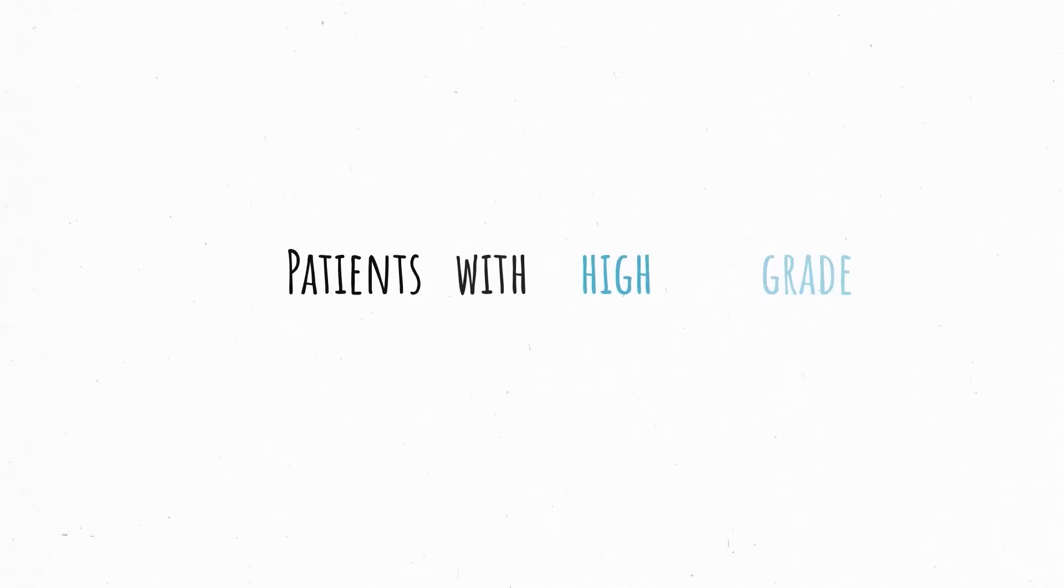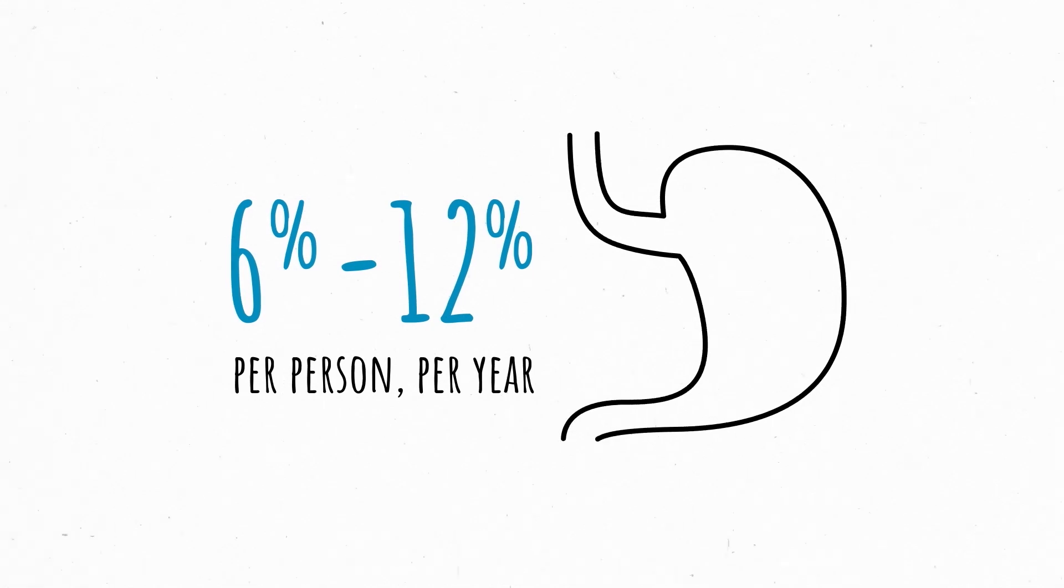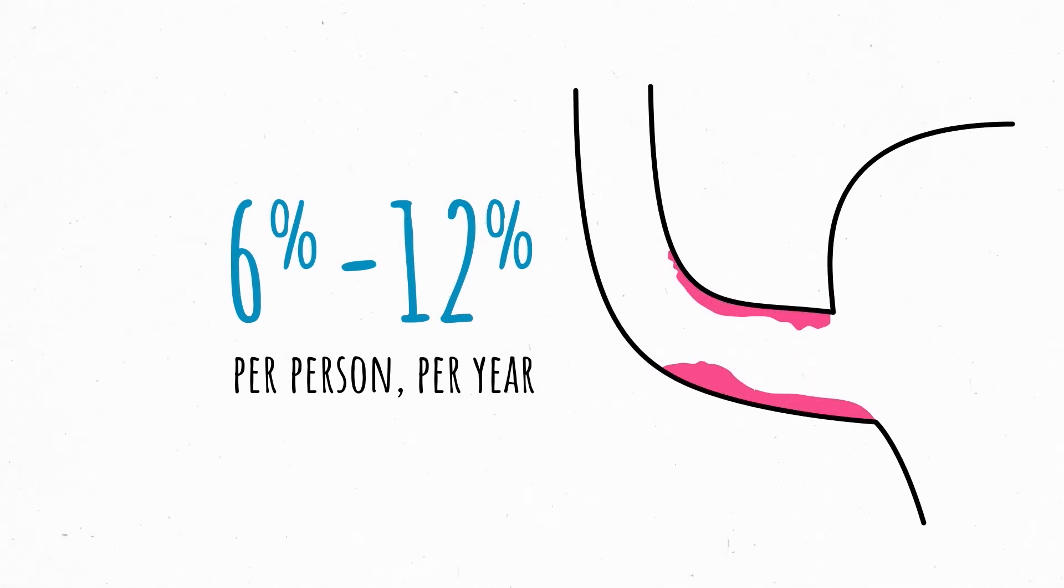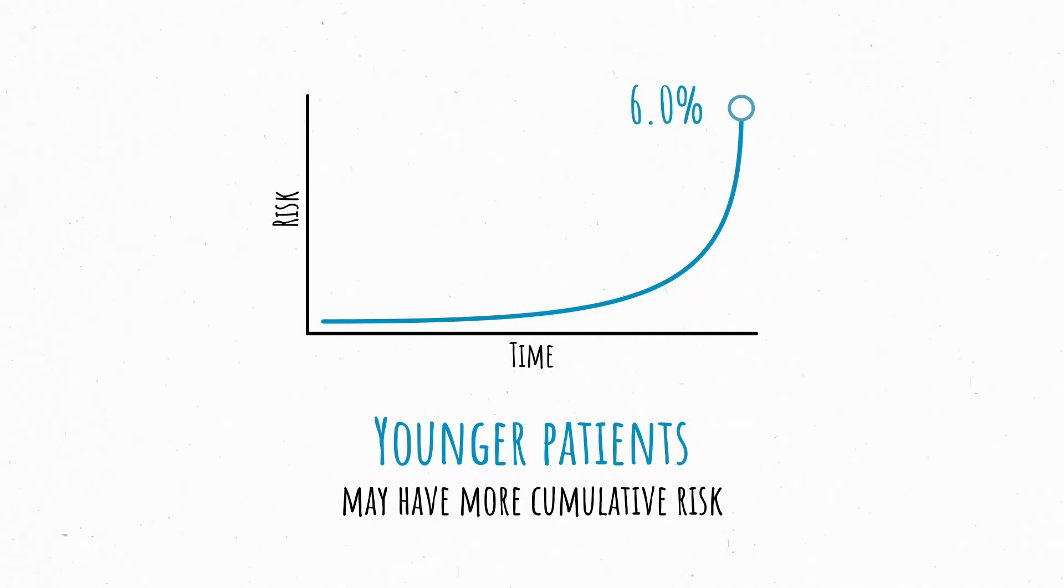We recommend that patients with high-grade dysplasia get treated as they are at the highest risk for developing esophageal cancer, at the rate of 6% to 12% per person per year, or even higher if they should have any nodules or visible lesions. This means that the risk is increased over a longer period of time, meaning that younger patients may have more cumulative risk over their lifetime than people at advanced ages.